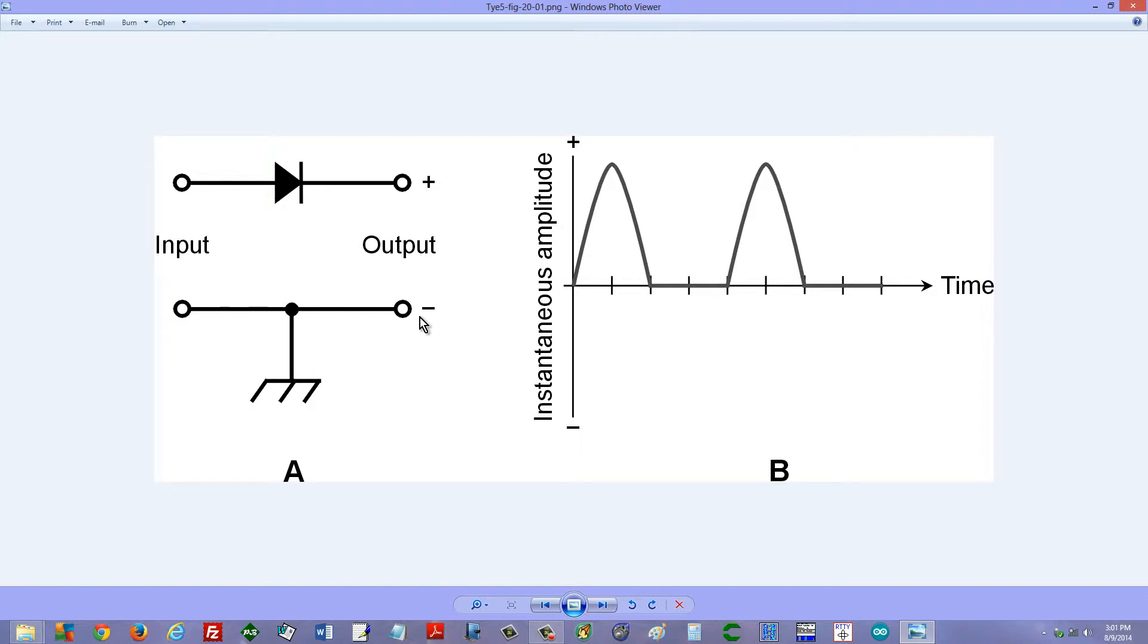And a negative polarity at ground relative to this because electrons can only leave this terminal and go back into the AC utility. If they attempt to come from the AC utility and get into this terminal, remember electrons are negatively charged, they can't.